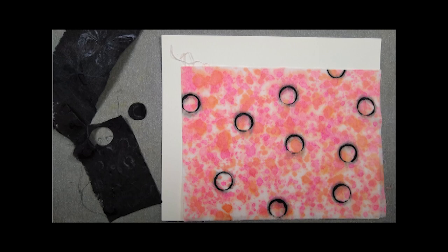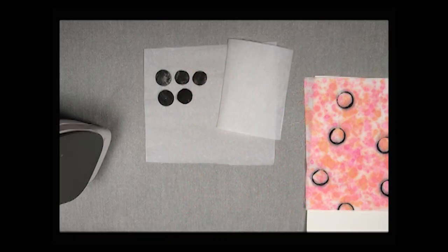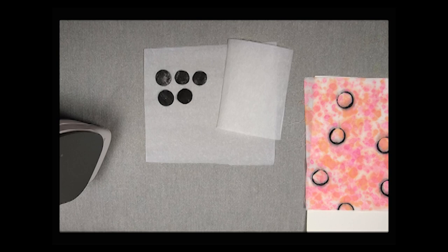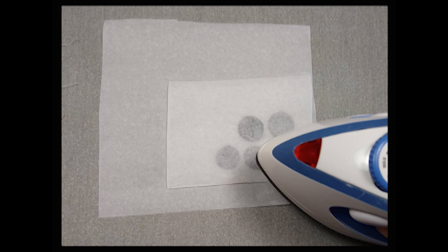First, I cut circles from the black fabric, following some circles that I had stamped on the fabric. After I cut them out, I'm going to put them on my ironing surface on a piece of parchment paper, with the wrong side or the back side up. I'm going to use Wonder Under 805, and I'm going to put that on top, adhesive side down, on top of the back of the circles.